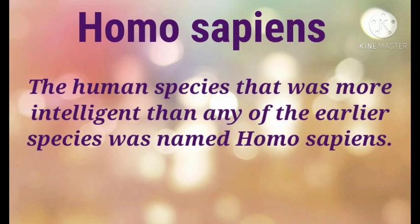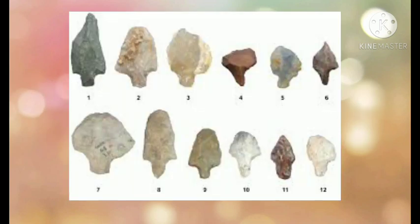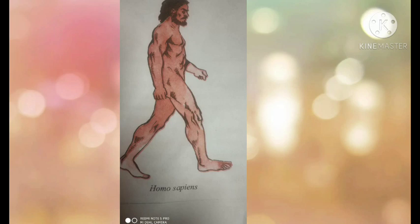The human species that was more intelligent than any of the earlier species was named Homo sapiens. In Europe, Homo sapiens is also known as Cro-Magnon man. Their remains have been found in Europe, Asia, and Africa. Homo sapiens made different kinds of tools and implements to suit the tasks they needed to do, including stone blades fixed in grooves and notches made in wood or bone handles. Homo sapiens had evolved to the stage of having a fully developed larynx, which could produce a range of sounds with subtle differences.